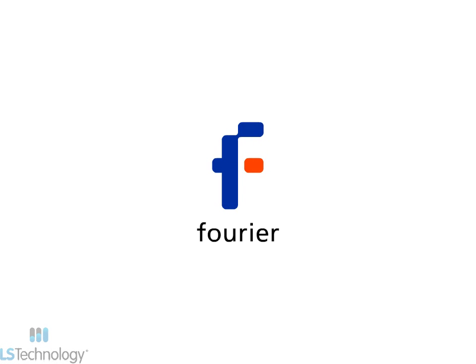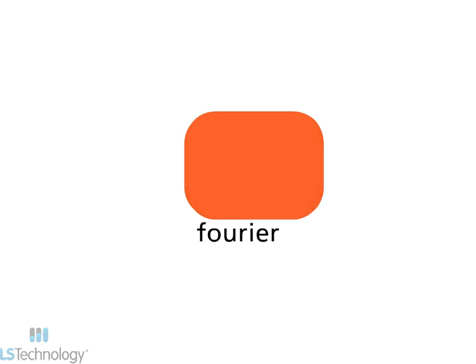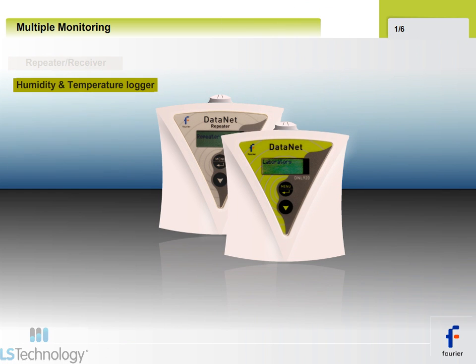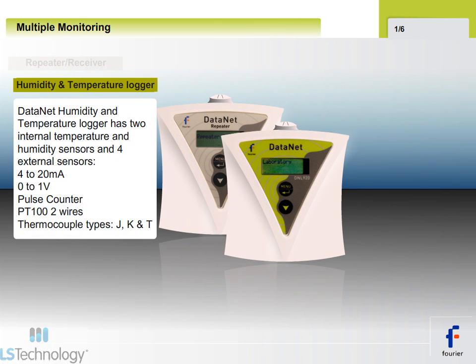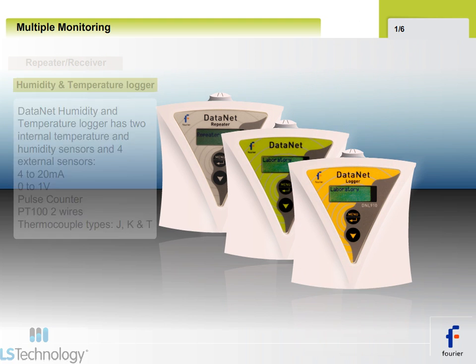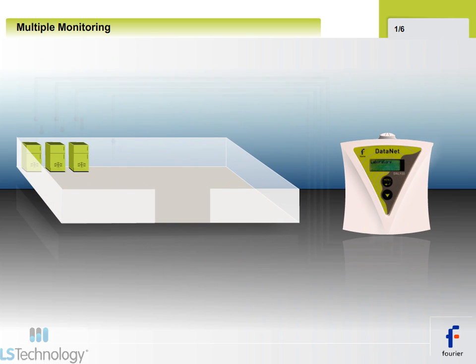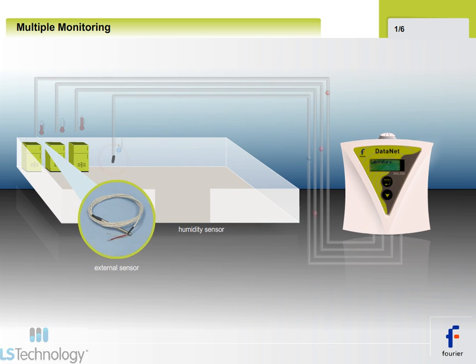Based on the wireless ZigBee protocol, the Datanet Data Acquisition System comprises three units: the repeater receiver, the humidity and temperature unit, and the temperature unit — plus four external inputs for temperature, both PT100 and thermocouples, as well as milliamp, voltage and pulse counter. Each transmitter in the network has the capacity to monitor data from multiple sensors.